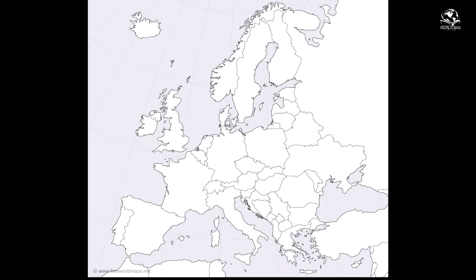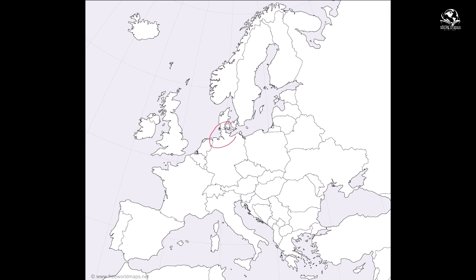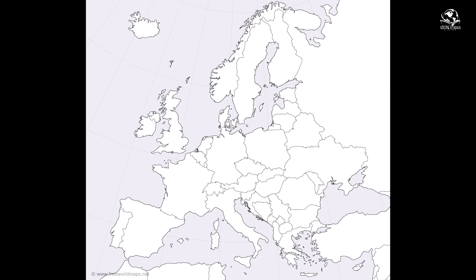To review the maps: the area circled is Scandinavia - that's where the Vikings are from. The Vikings go to England, which is an island above France. Next we have the Angles and the Saxons - circling where they're both from, also going to England. The word Anglo-Saxons comes from people of Angles and Saxons descent in England. Finally, the Magyars - this is the one most people have the hardest time with - they're from central Asia and they migrate into central Europe.